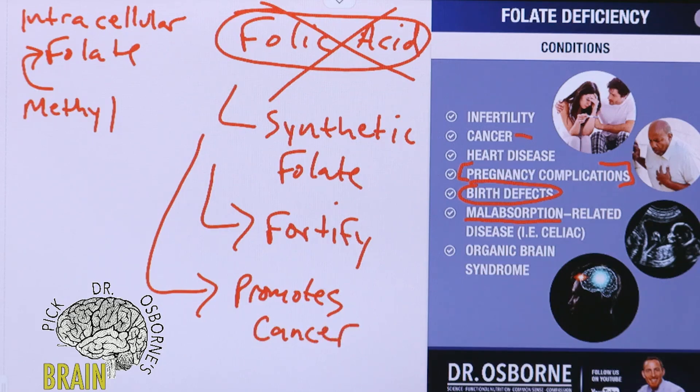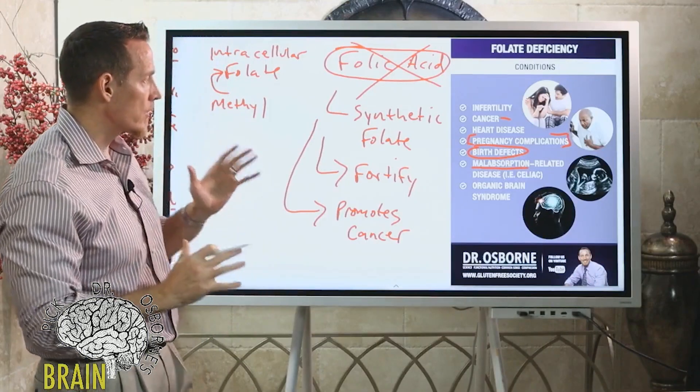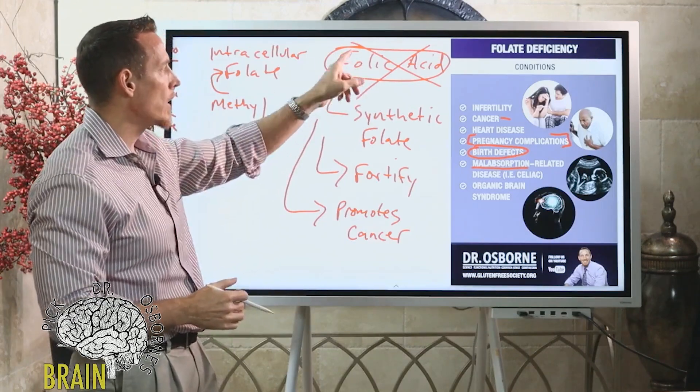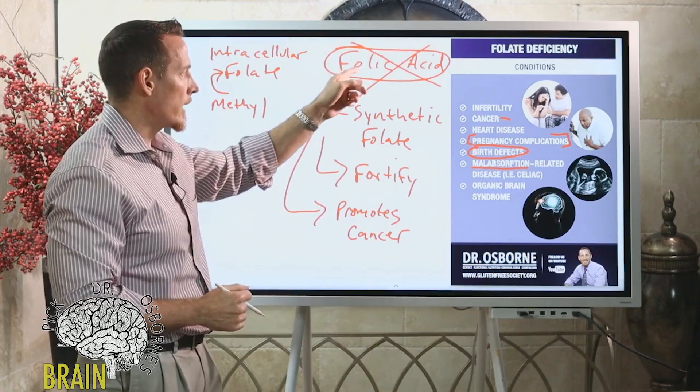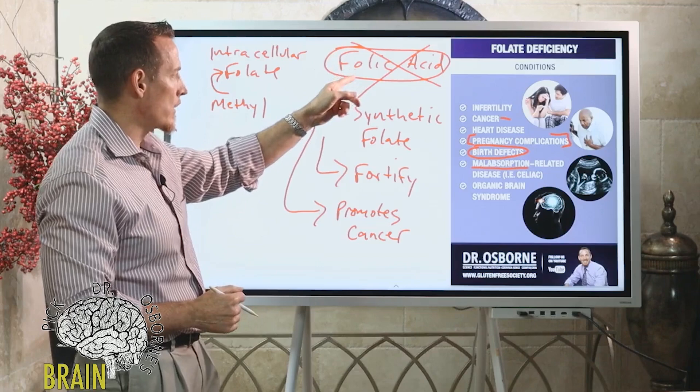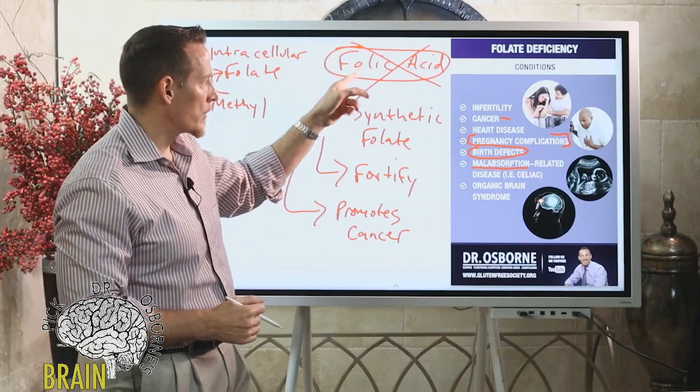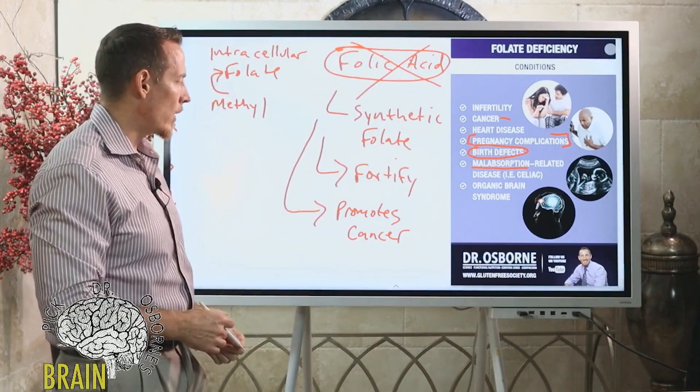A lot of scientists are screaming we need to take the fortification of folic acid out of foods. It's not the proper way to add folate to the diet and it's synthetic and it leads to health problems. Even though it's led to less neural tube defects, it's creating other problems. If we just put the right type of folate in the food, I think we'd be better off.